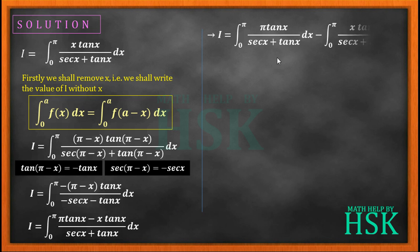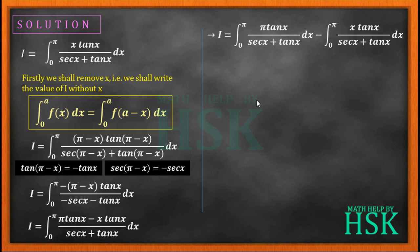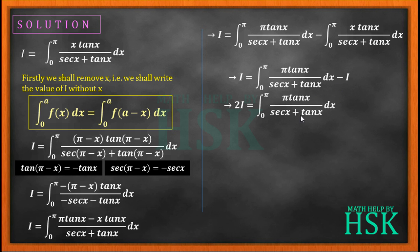I is further written as the difference of two integrals. The first is pi into tan x upon sec x plus tan x dx from 0 to pi. The second is x tan x upon sec x plus tan x dx from 0 to pi. The second definite integral is equal to I itself. Therefore we write: I is equal to pi times the integral of tan x upon sec x plus tan x dx from 0 to pi, minus I. So 2I is equal to pi times the integral of tan x upon sec x plus tan x dx from 0 to pi. We mark this as equation 1.